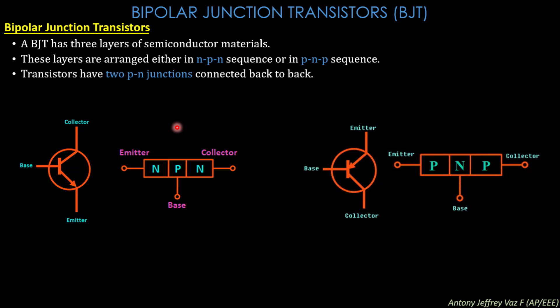Transistors have two PN junctions connected back to back. A diode has a single PN junction, but a transistor has two PN junctions connected back to back.